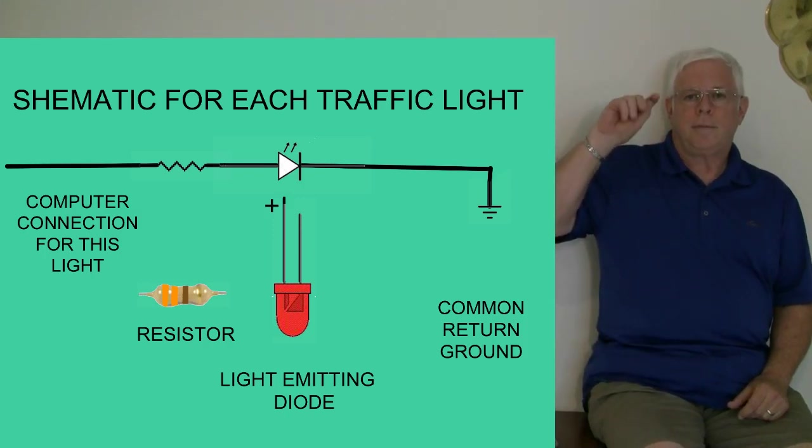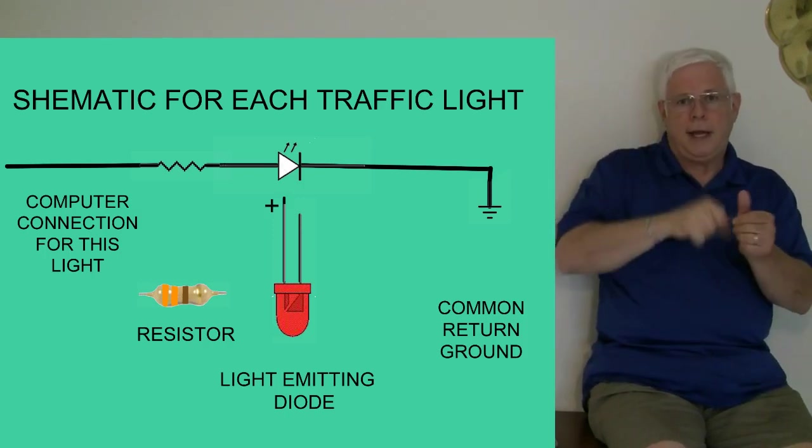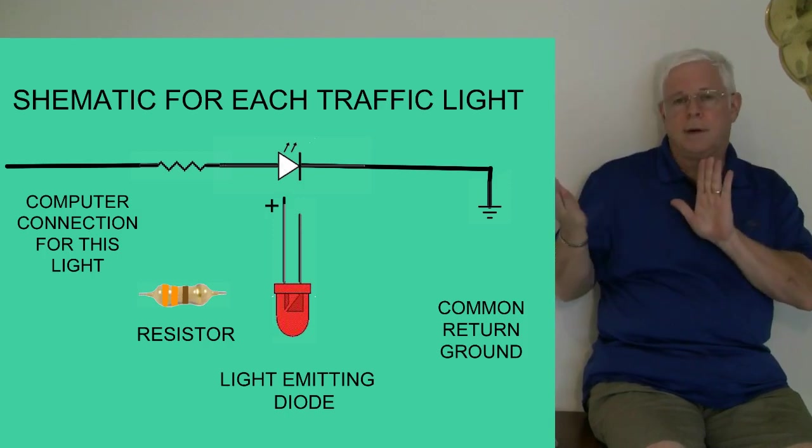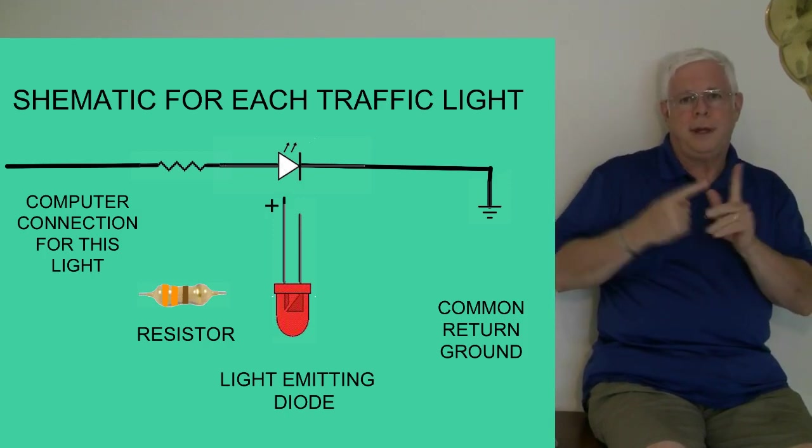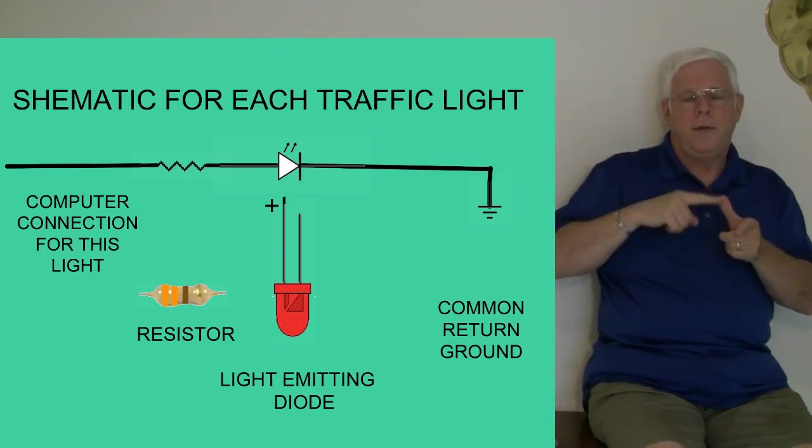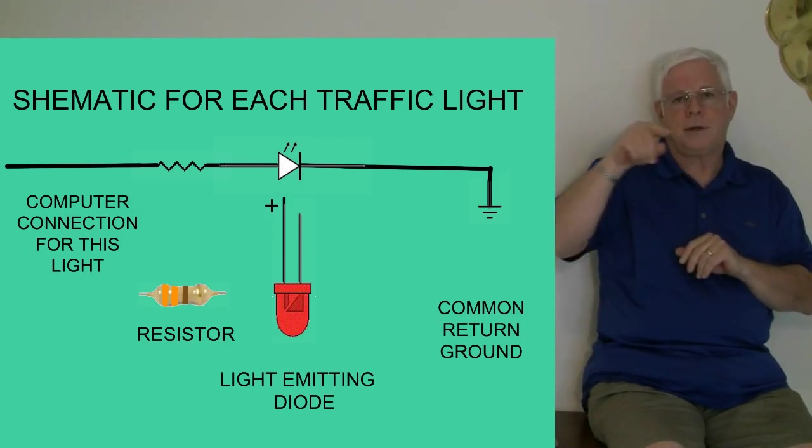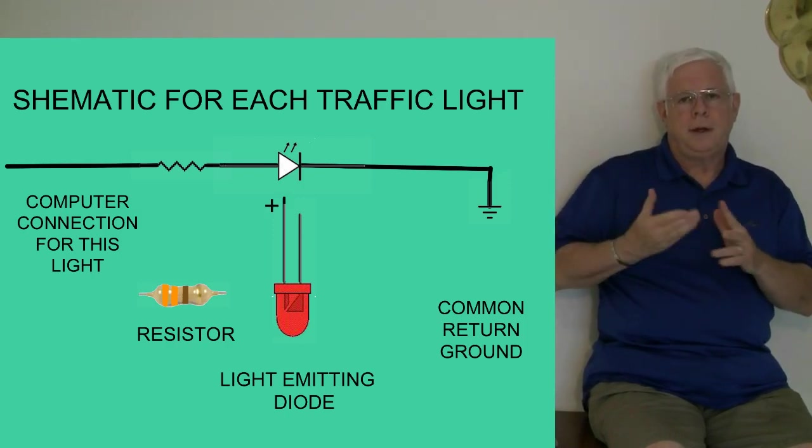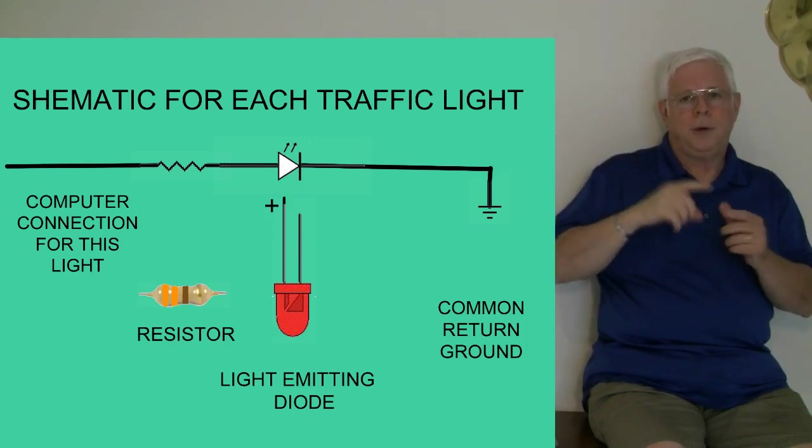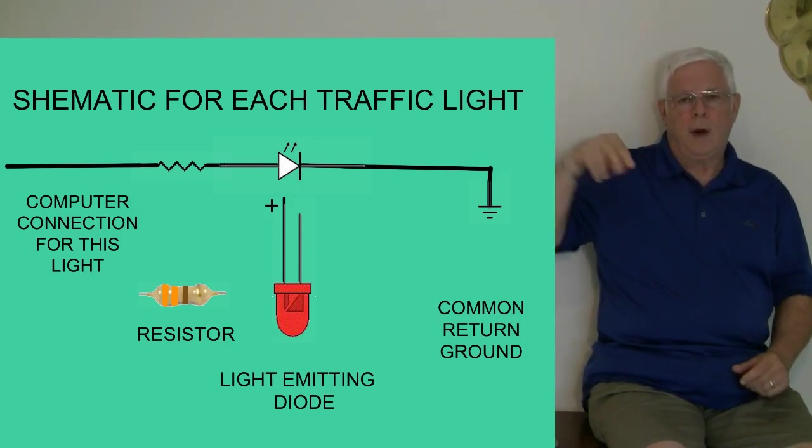The circuit for each of the lights is shown here. We start with the pin on the computer, and then it goes through a resistor, and then to the LED, and then to a common ground.